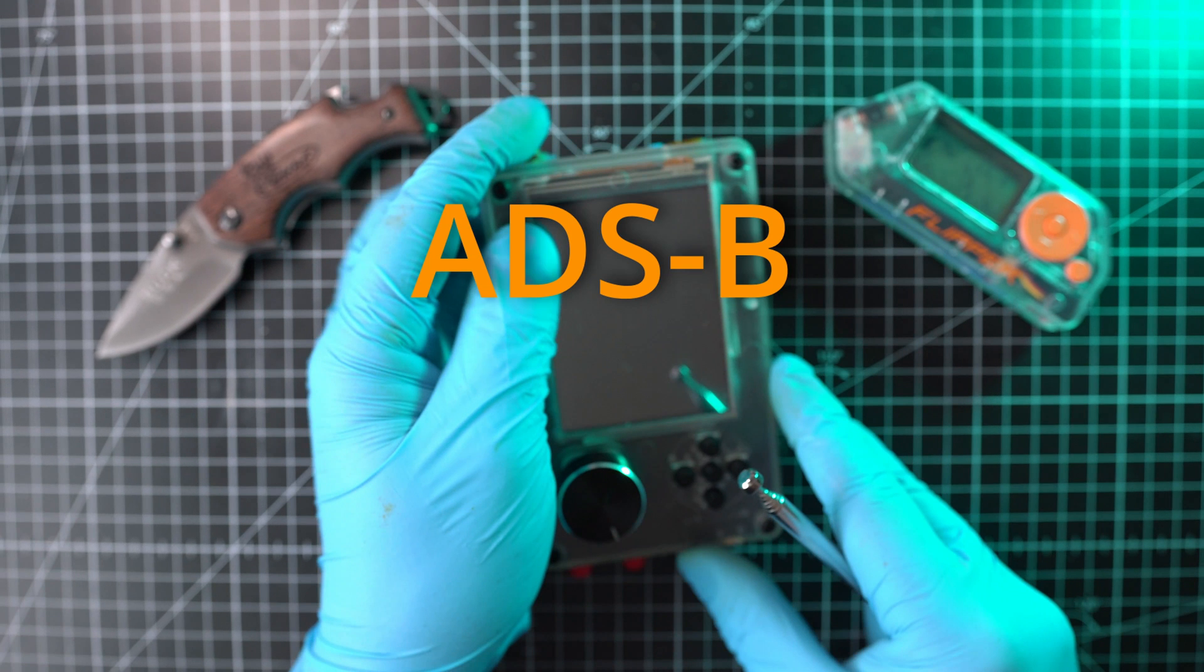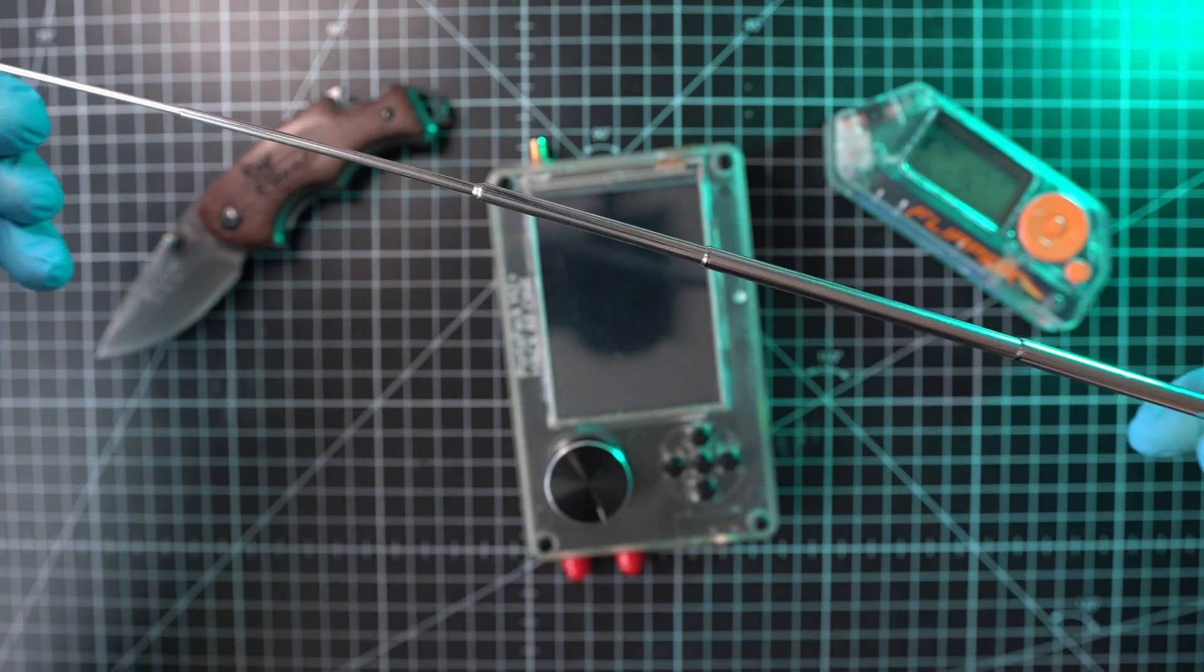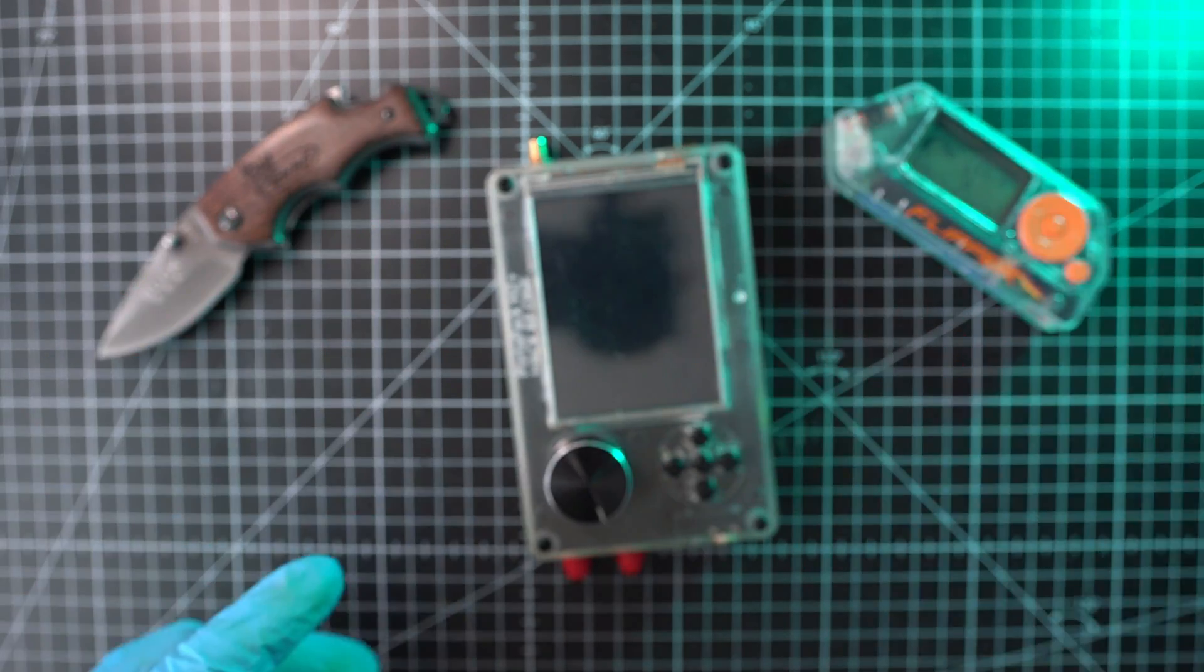As we know, ADSB is operating on 1090 MHz. So pull out your antenna, even this telescopic antenna does the job.